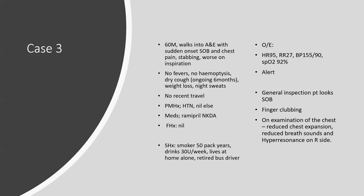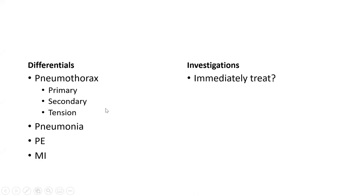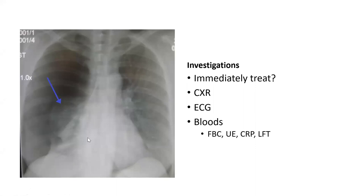He's quite stable, so you'd do a chest X-ray — you're not in a hurry, you don't think it's a tension pneumothorax. Also ECG and bloods. His chest X-ray shows the lung completely collapsed on the right, but no tracheal deviation and no mediastinal shift, so it's not a tension pneumothorax — this is a pneumothorax.